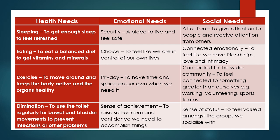Emotional needs: social security — a place to live and to feel safe; a choice — to feel like we're in control of our own lives; privacy — to have time and space on our own when we need it; and a sense of achievement — to raise self-esteem and confidence, we need to accomplish things.